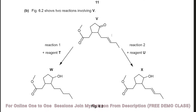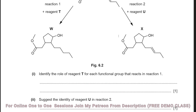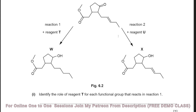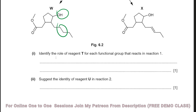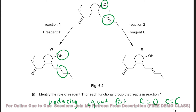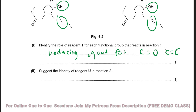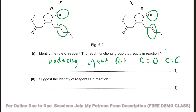Fig. 6.2 shows two reactions involving V. For reaction 1, reagent T acts as a reducing agent for both the C=O (ketone) and the C=C (alkene) functional groups. For reaction 2, reagent U only reduces the C=O but not the C=C, so suggest the identity of reagent U: it is NaBH4, which selectively reduces ketones but not alkene double bonds.